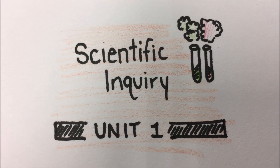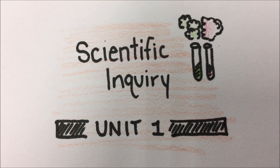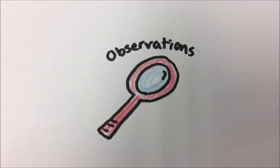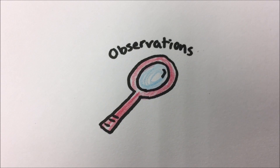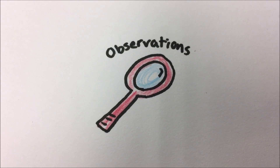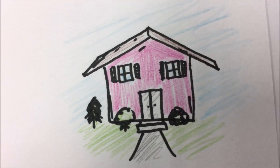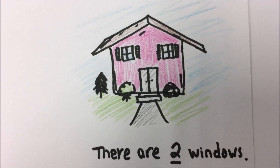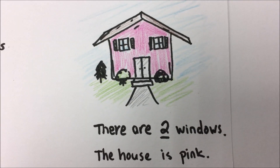Welcome to the review video on the scientific inquiry unit. In this unit we talk a lot about observations that scientists make, whether looking at a specimen or doing an experiment. If we take a look at this picture we can make a lot of different observations, such as there are two windows and that the house is pink.